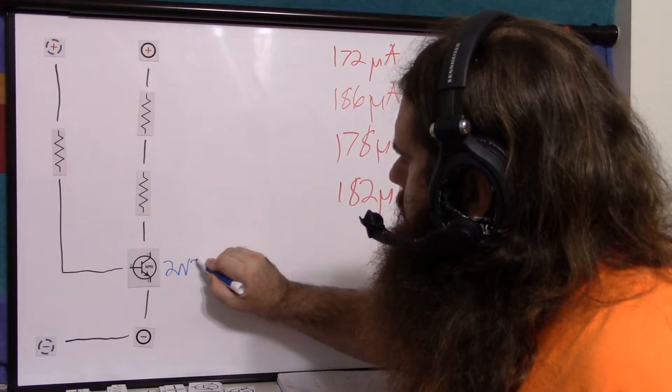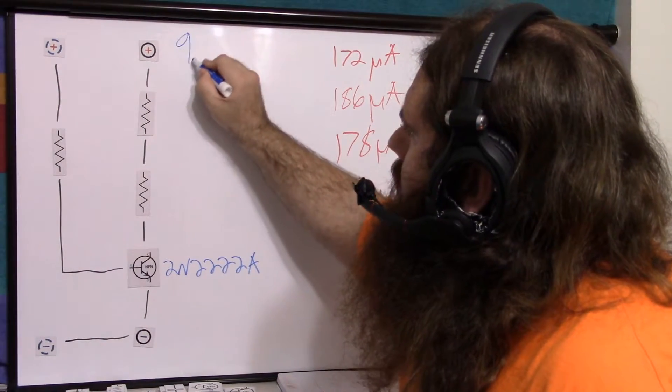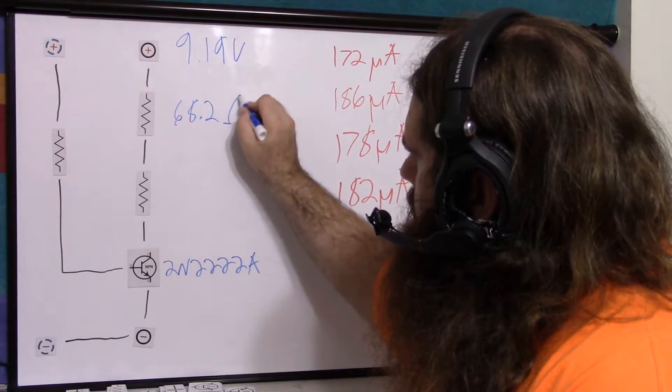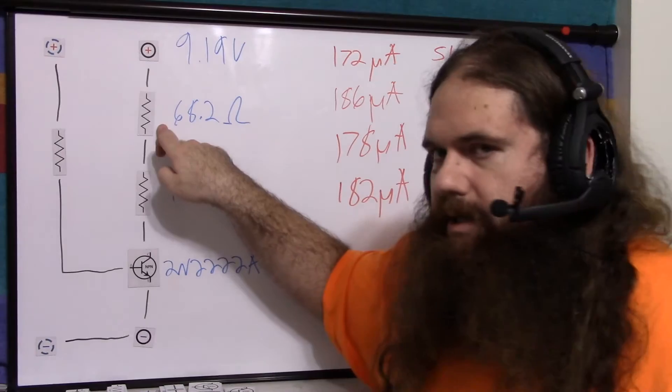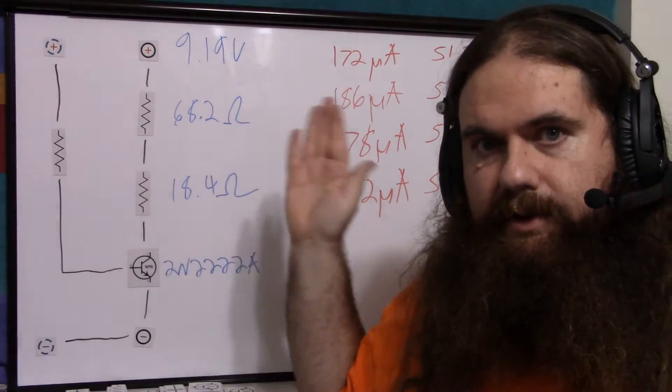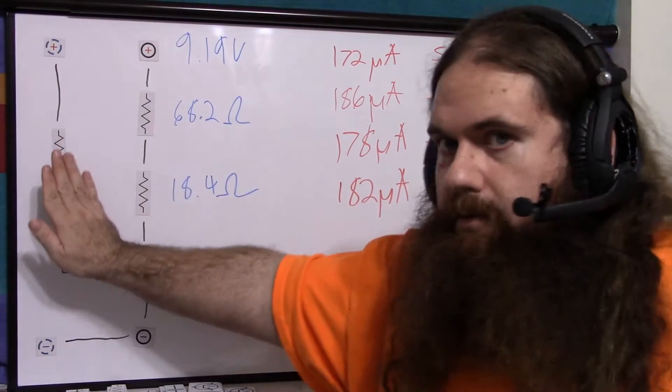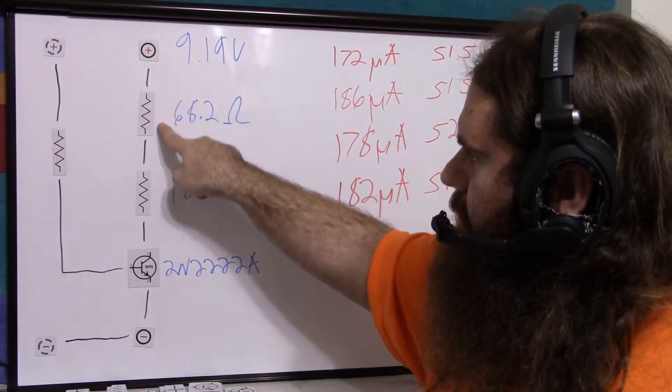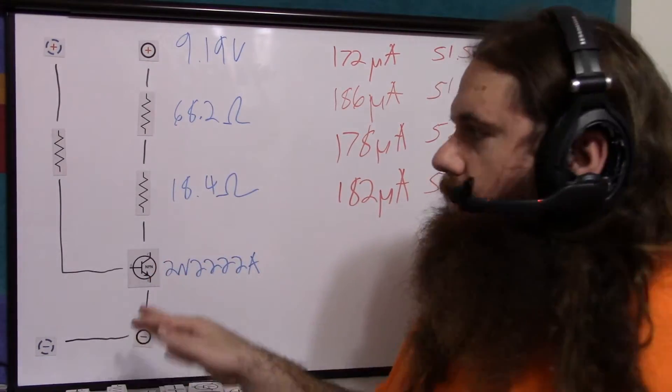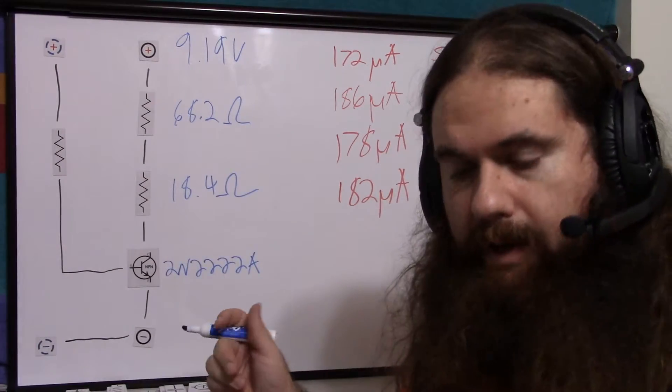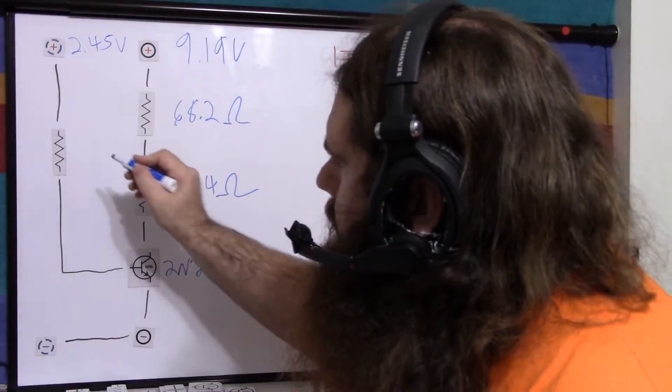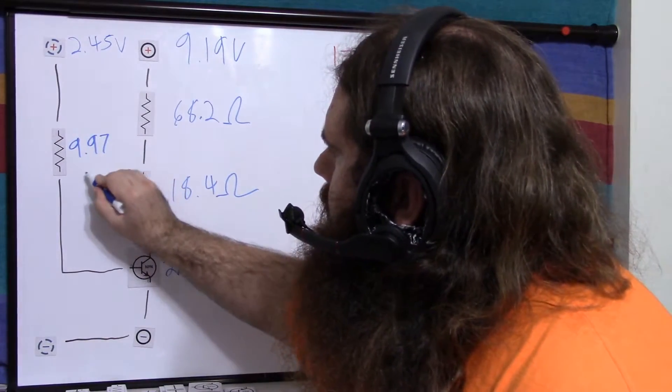These are the same 2N2222A transistors. The same 9.19 volts power source here. The same 68.2 ohm and 18.4 ohm resistors. This is the collector resistor and this is the emitter resistor. All I did was move it up here. Resistors in series add. The idea was I wanted the current, the target current, to remain the same. So ignoring the bias, you've got the same voltage in, total resistance, and the same transistor. So the collector to emitter throughput is the same as in the previous circuit, so that we don't introduce a new variable. Over here, I have my bench power supply that I configured at 2.45 volts. And this resistor ended up being, according to my multimeter, 9.97 kilo ohms.